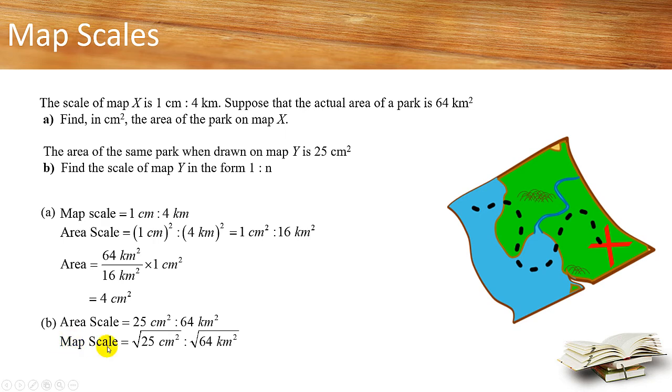And now we have to find the map scale. To do that, you need to square root both sides. So when you square root 25 cm², you get 5 cm. And when you square root 64 km², you get 8 km.